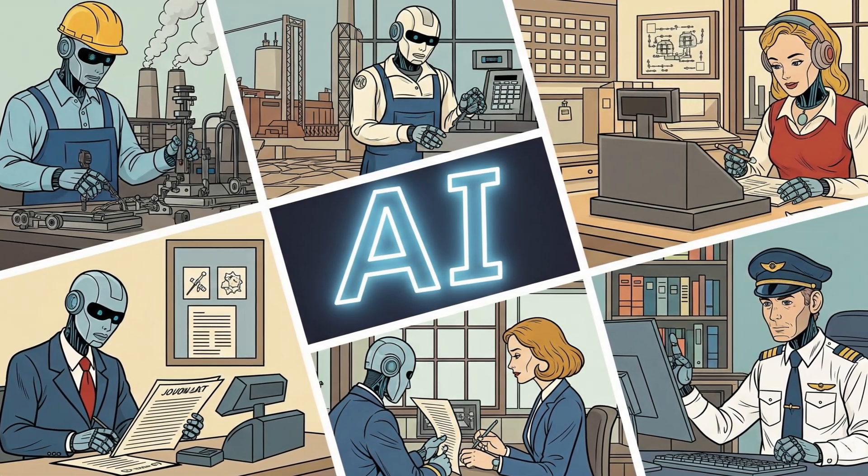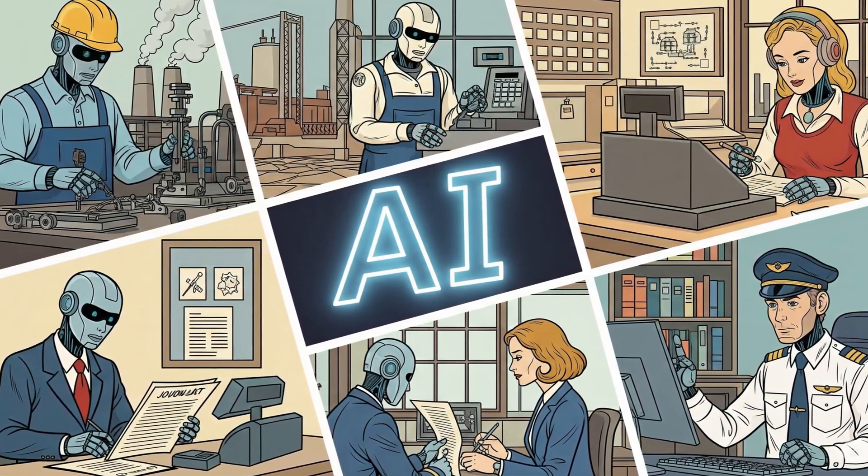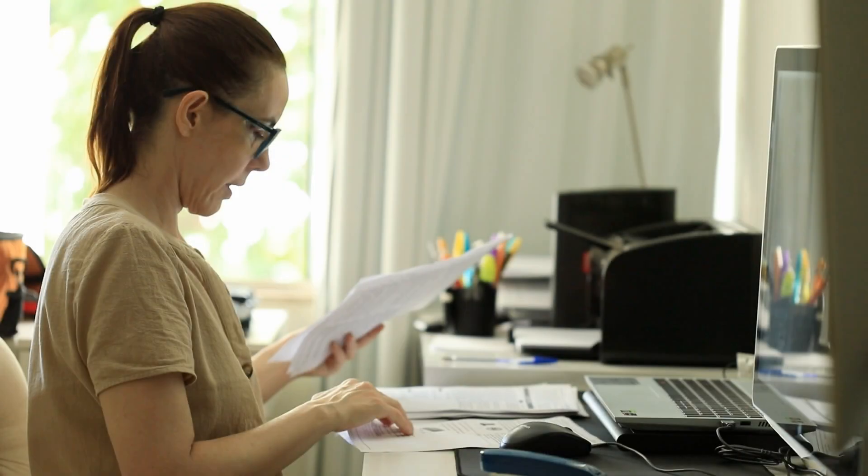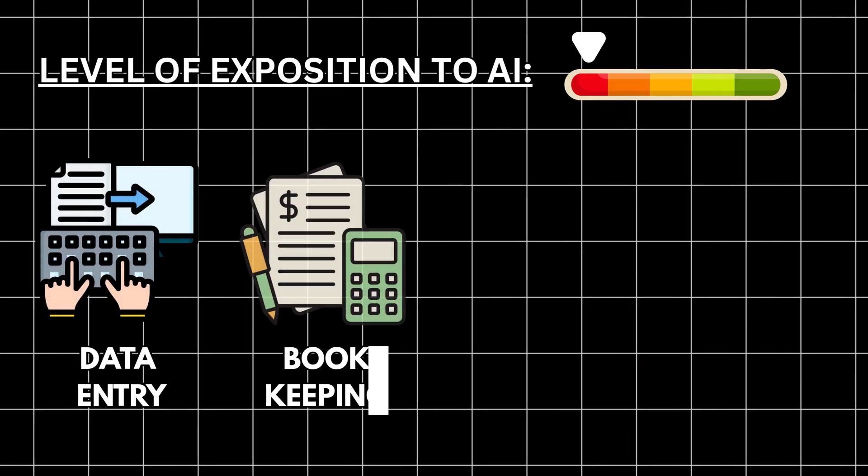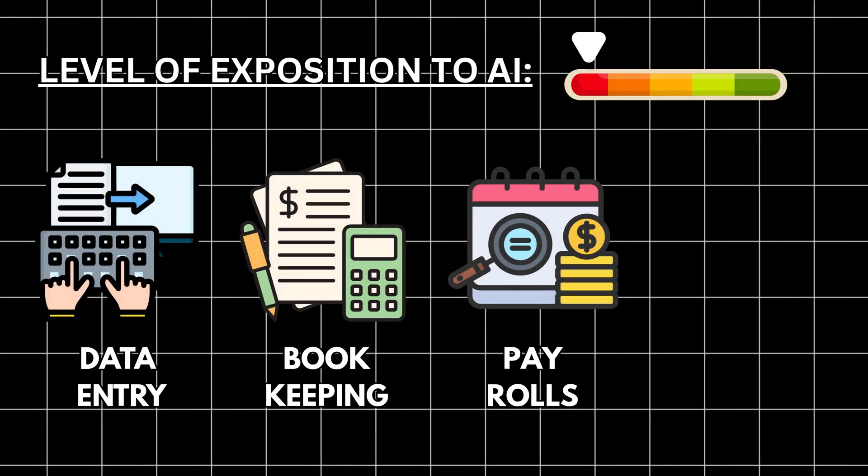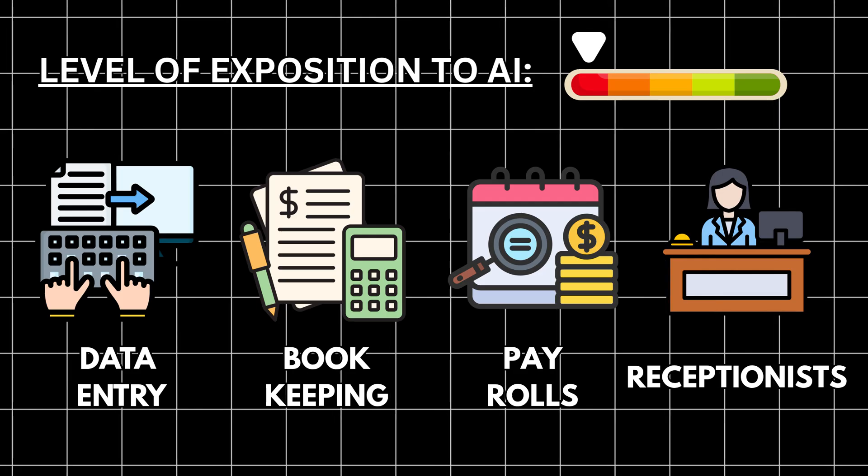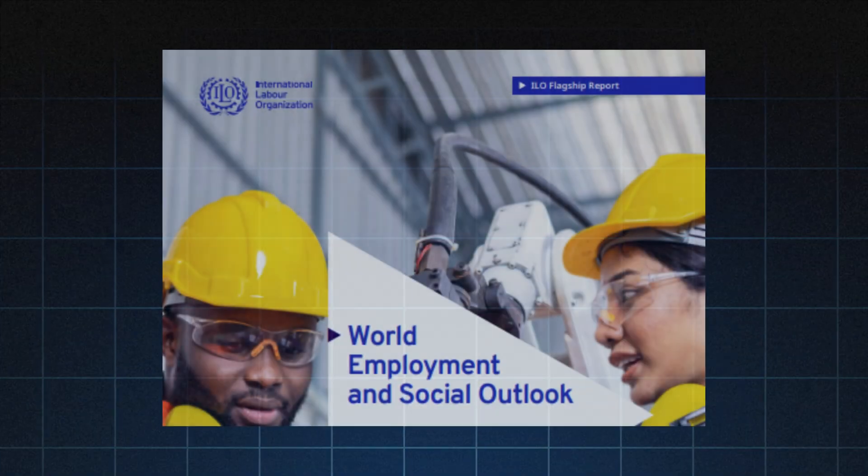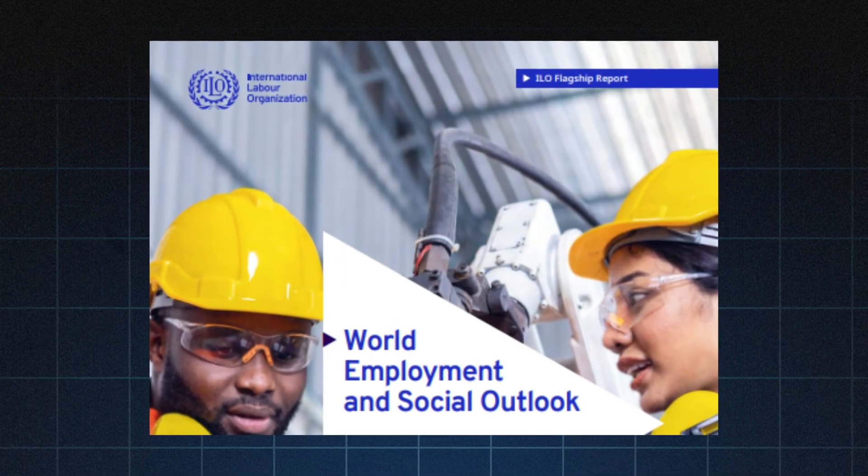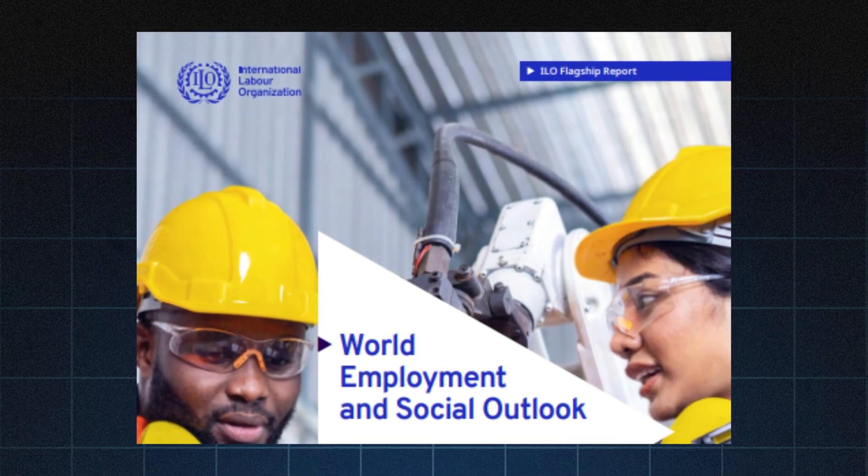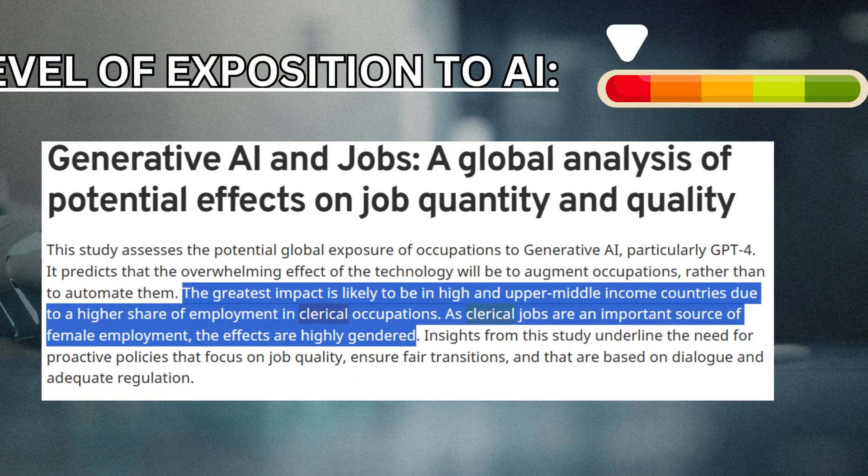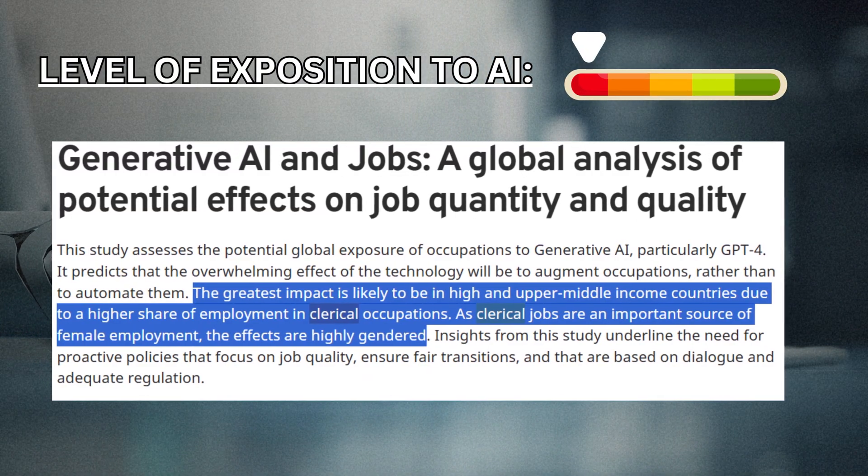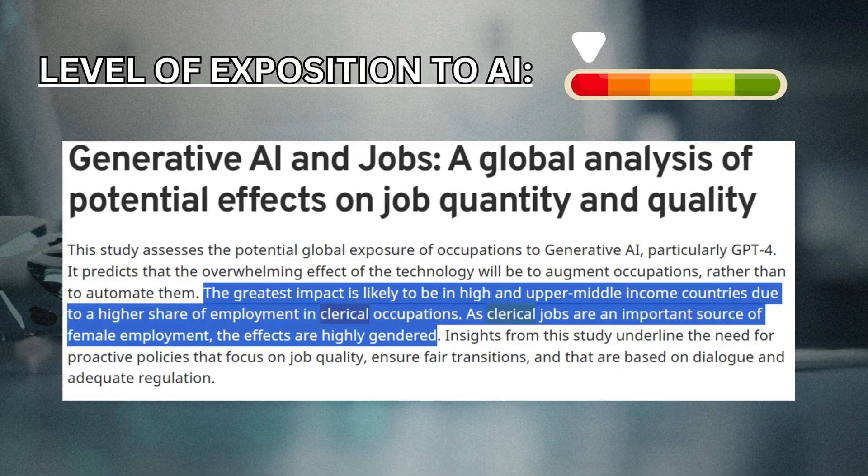Let's walk through common job families in plain English, with real data guiding the tone. First, clerical and administrative work: data entry, basic bookkeeping, standard payroll steps, routine reception tasks. According to recent ILO analyses, 2024 to 2025, clerical roles have the highest share of tasks exposed to generative AI.